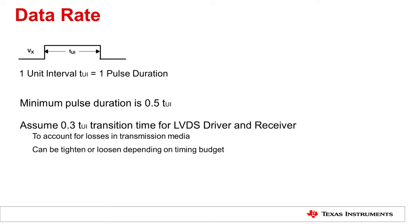Please keep in mind that this 0.3 UI is not a strict limit. Depending on the operation condition and system timing budget, the 0.3 UI timing can be tightened or loosened. Data rate capability can be determined by output rise and fall times.